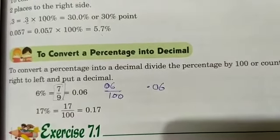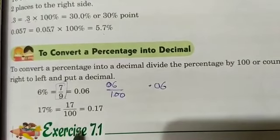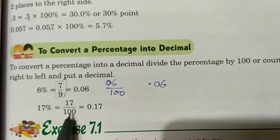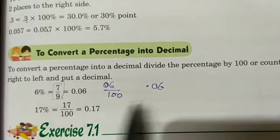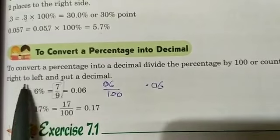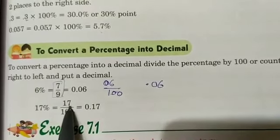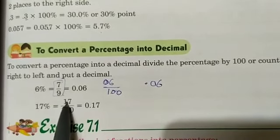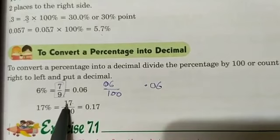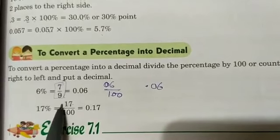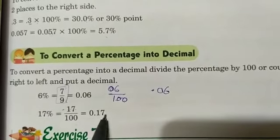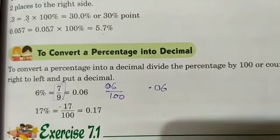For 17 percent: 17 by 100. We count two places from the right to the left and put the decimal — first digit, second digit — and then put the decimal. The answer is 0.17.